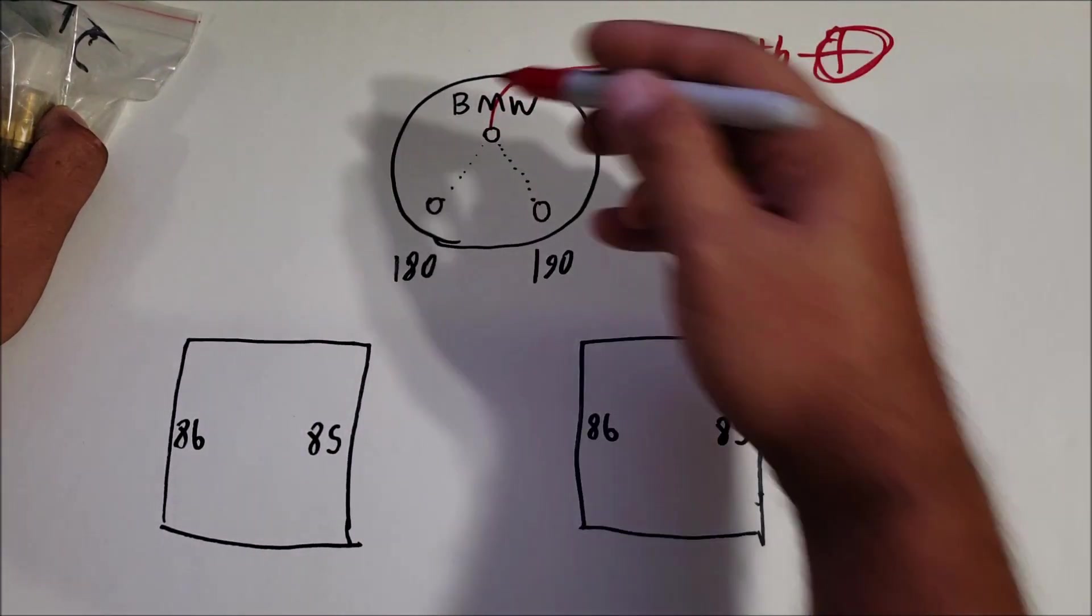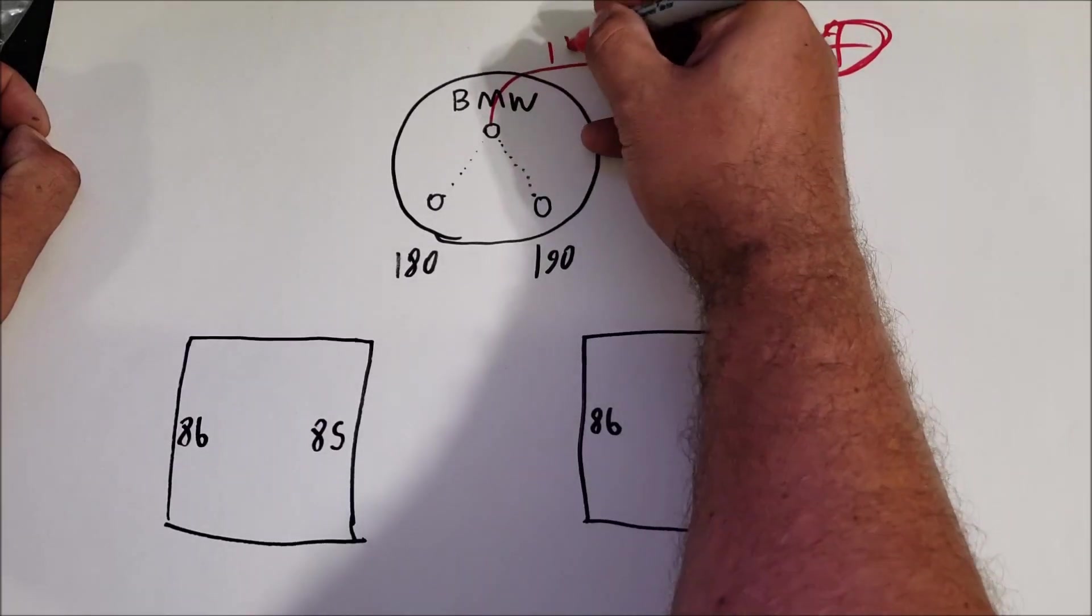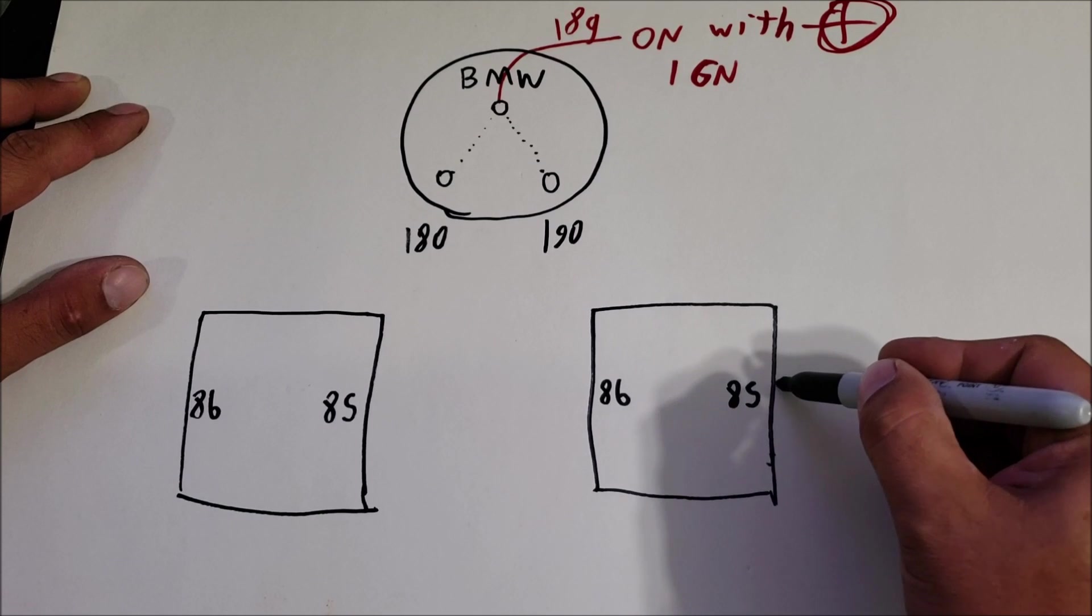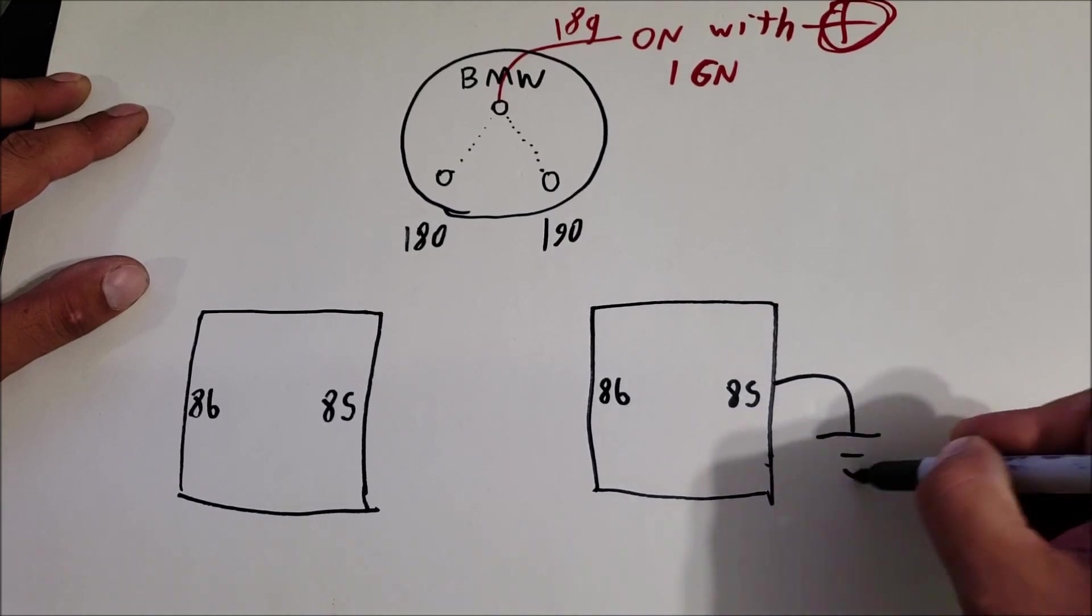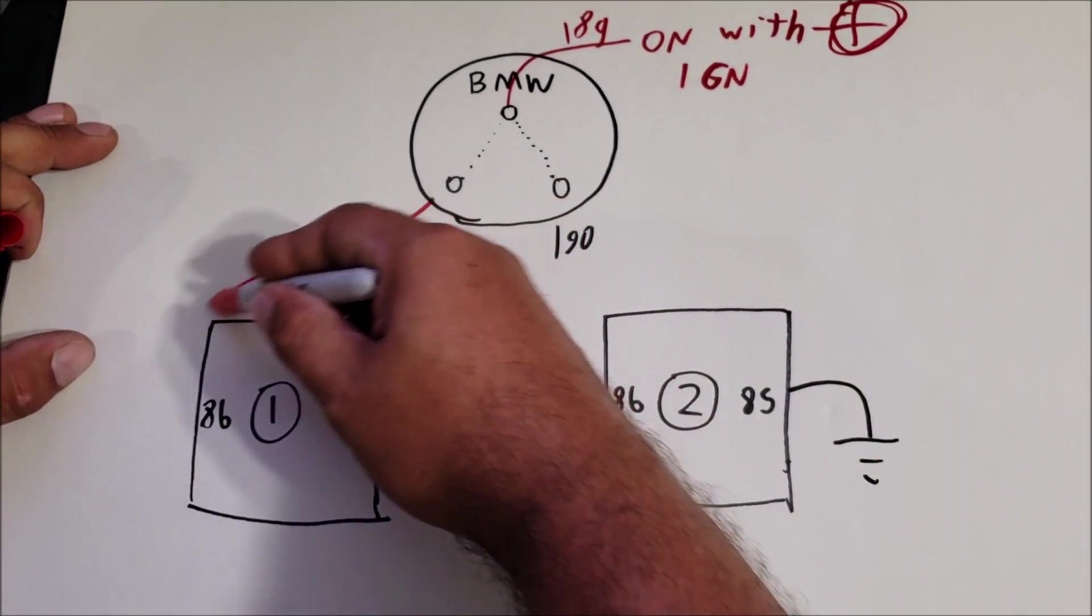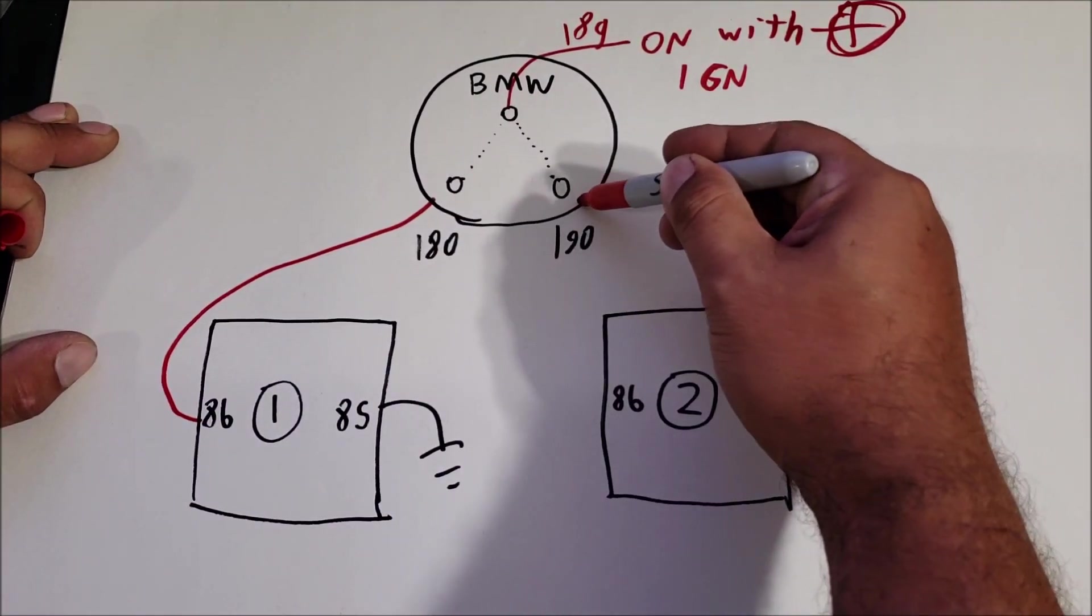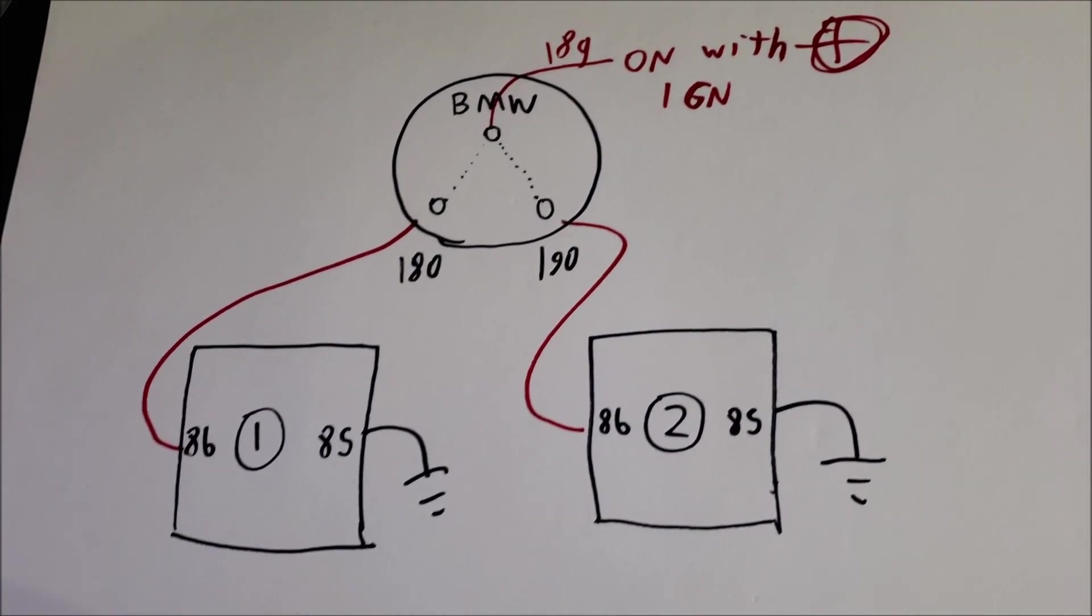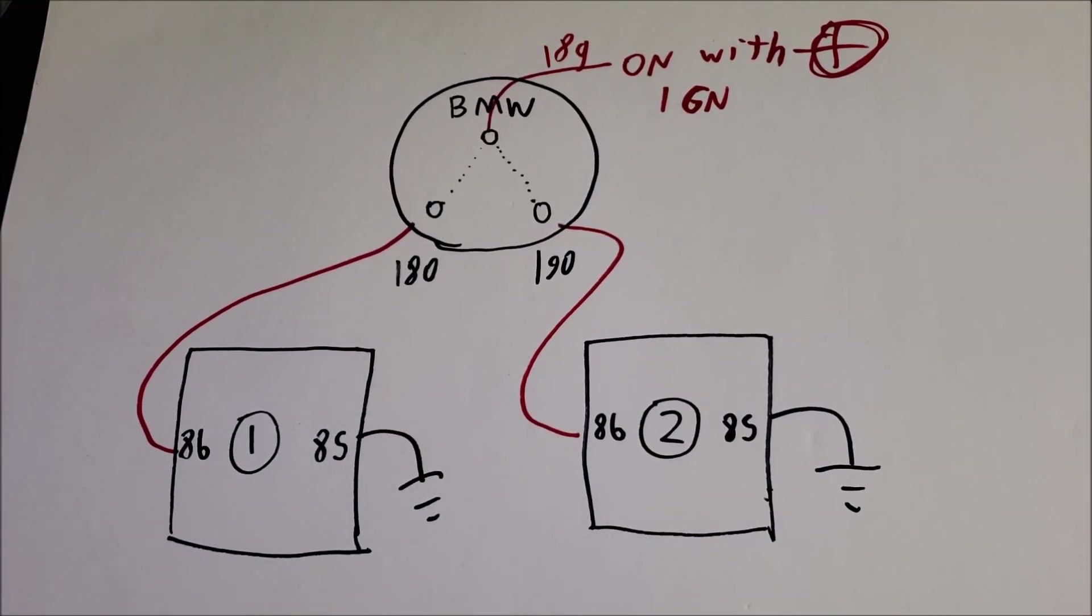In this situation we're not running temp sensors down there, so 85 is just grounded to chassis wherever you want that ground to be. Now you're running your 180 over here to fan one and your 190 over here to fan two. That's all you do. As simple as that, everything's ready to go.